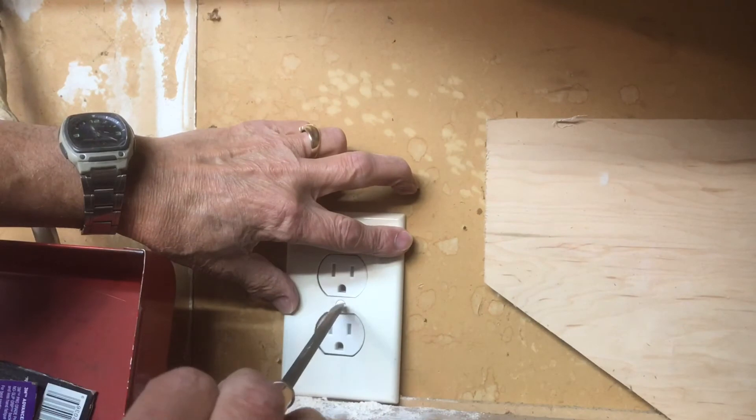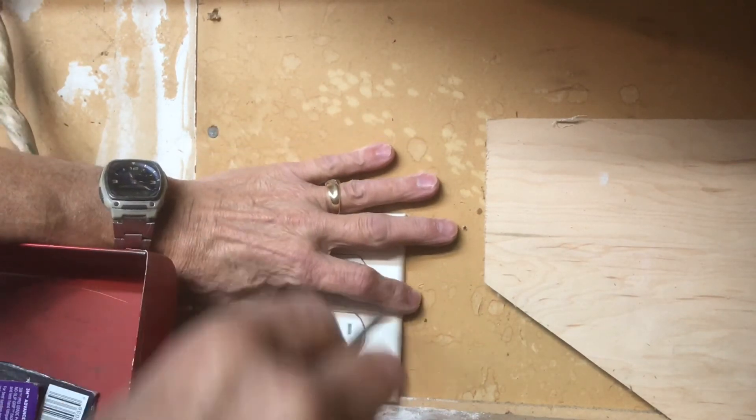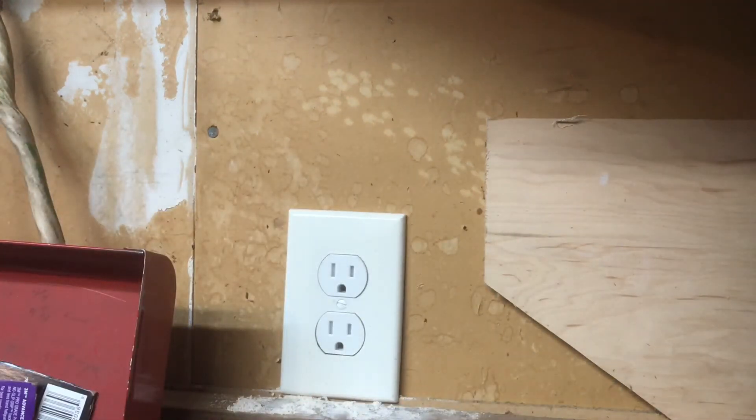Then we put our wall plate on. Use a thin flat screwdriver and tighten her up. And we're done, good to go.